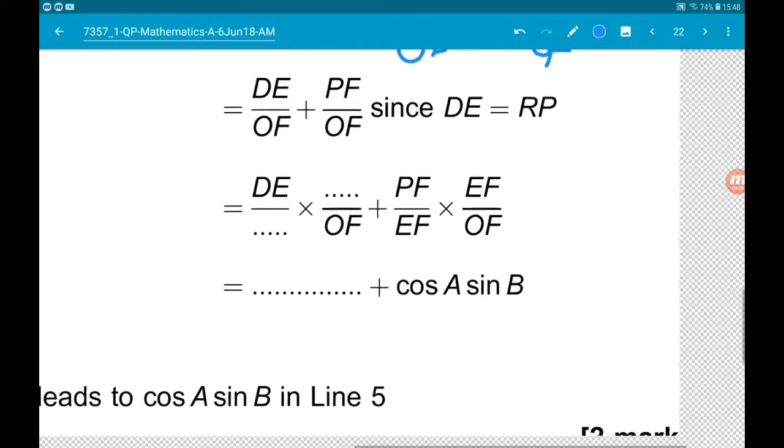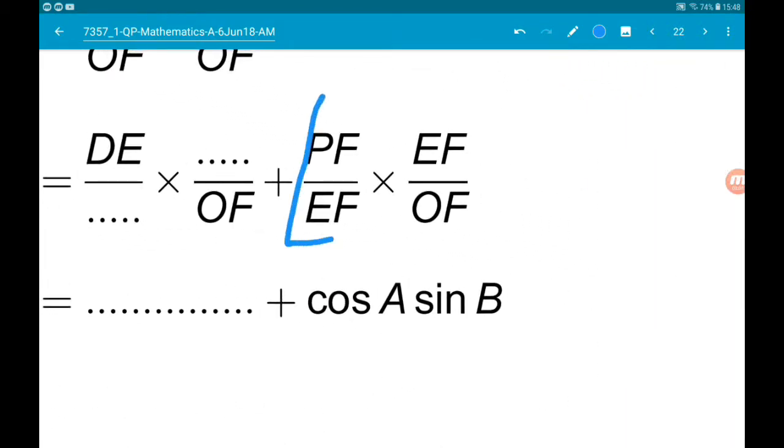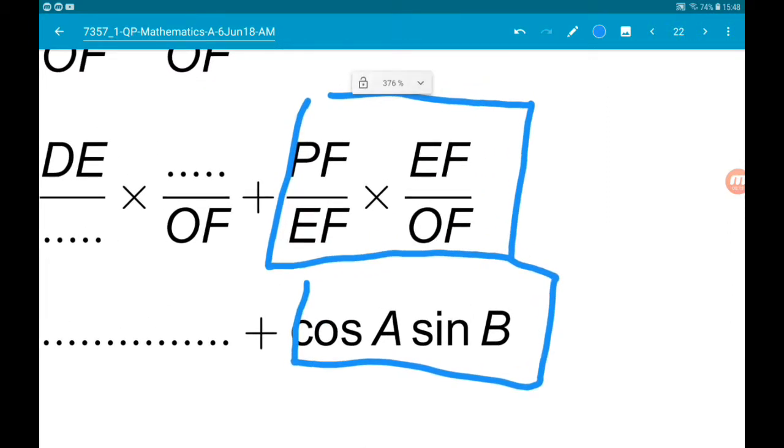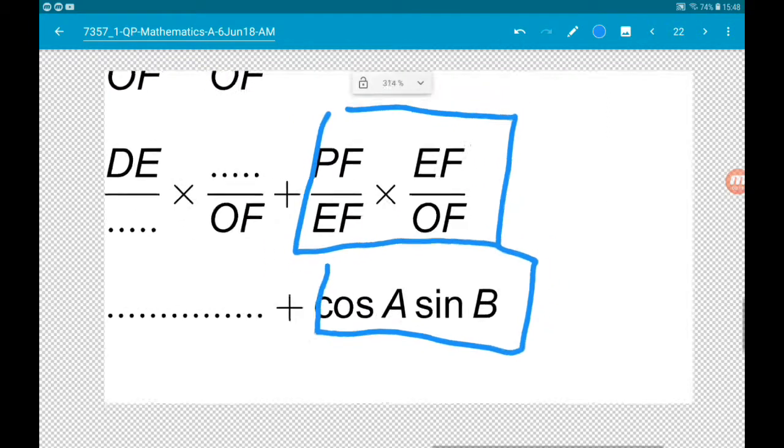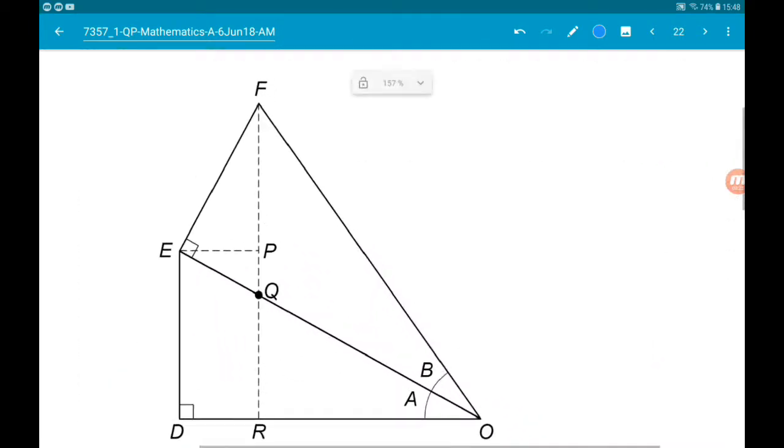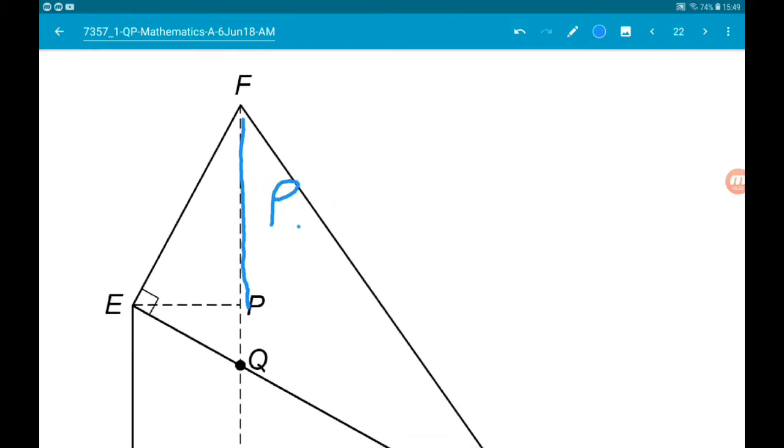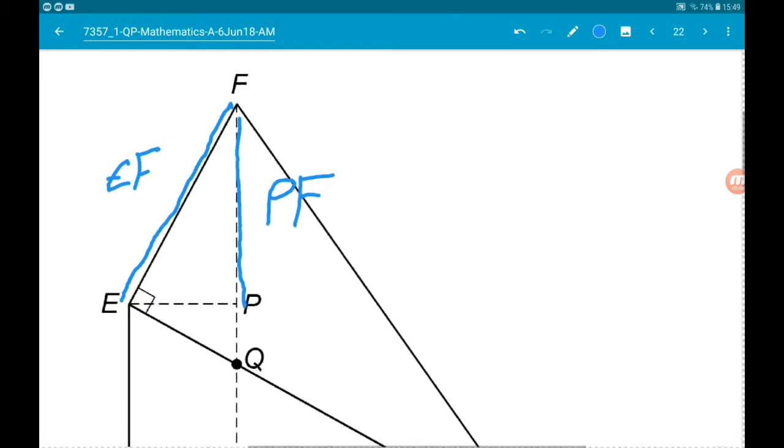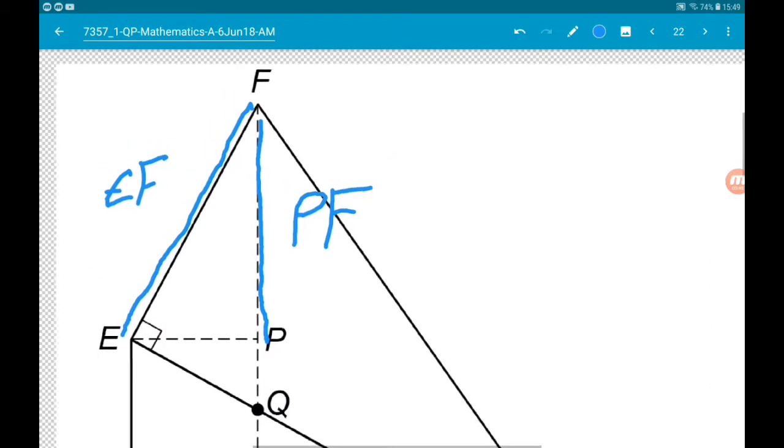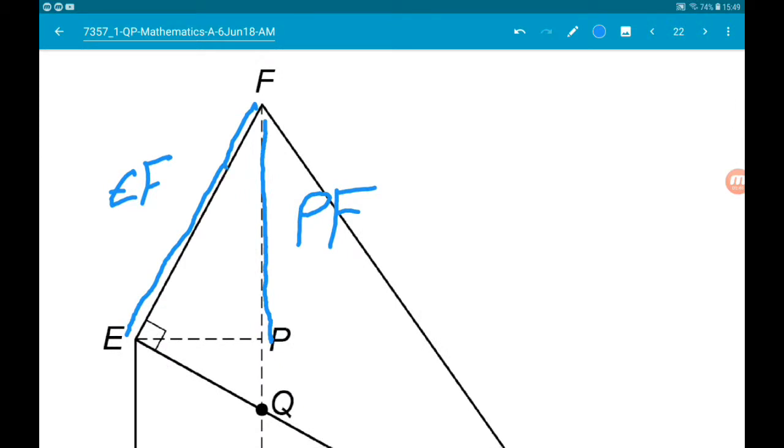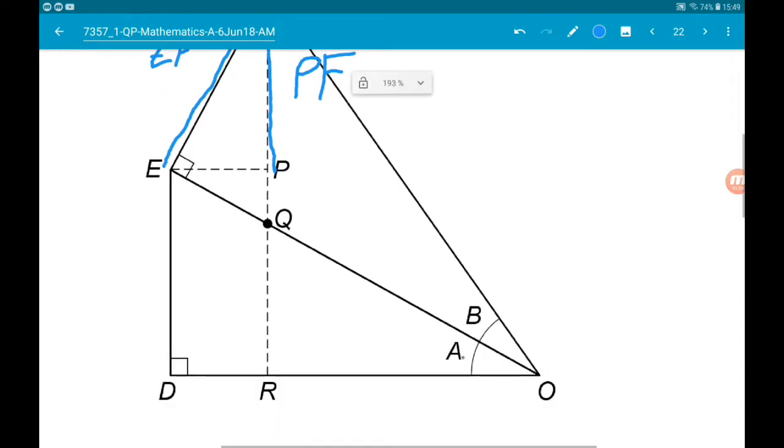So we want to know how do we get from this bit in line 4 to this bit in line 5. So let's first of all then have a look at PF over EF. So PF is this line here. EF is this line here.